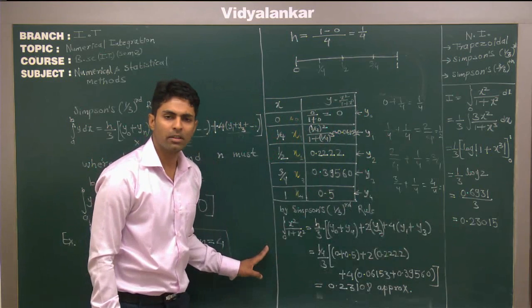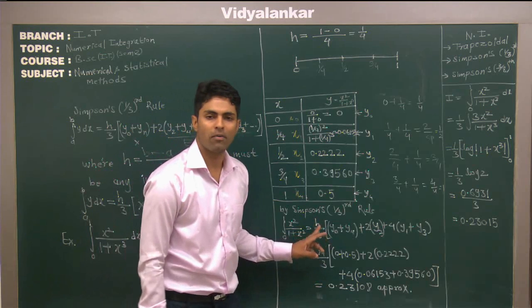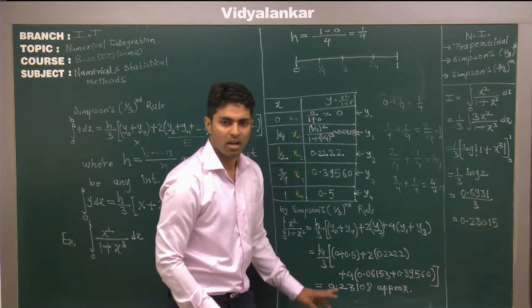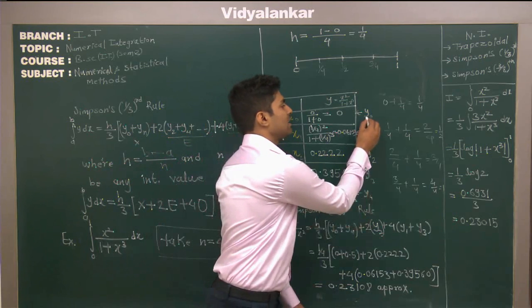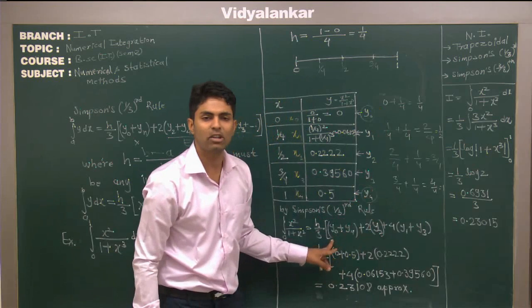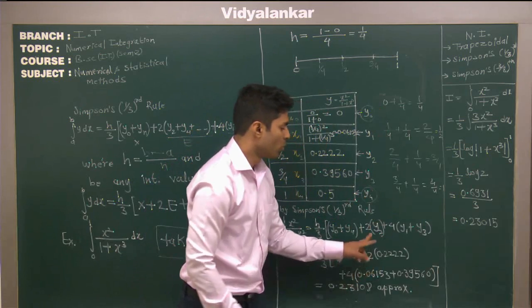By Simpson one third rule we know the formula. We have put in a form of formula where h upon 3, here extreme value is y0 and y4. So I have written y0 plus y4 plus 2 y2.